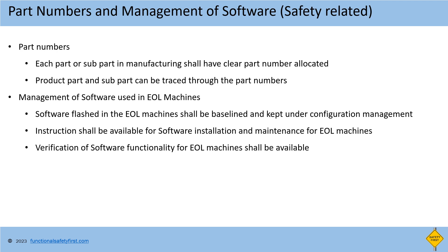The other important point is maintaining part numbers and ensuring version management for the software used in the EOL machines. The part number for each part or subpart in manufacturing shall be clearly identified and linked to the product part number so it can be traced in case of failure reported in the field. The software flashed in the EOL machines shall be baselined and kept under configuration management, and instructions for software installation and maintenance shall be in place. Verification of machine functionality for every software upgrade shall be performed and recorded.